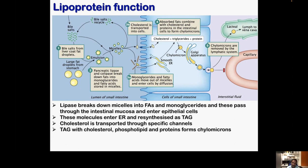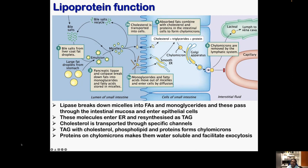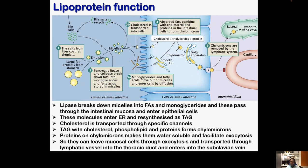The chylomicrons must exit the intestinal epithelium. They use the Golgi apparatus — the cell organelle important for exocytosis — to come outside. Now in the interstitial fluid, because chylomicrons are really large, around one micron, they cannot enter blood capillaries whose pores are too small. Therefore they enter the lymphatic system, which has bigger pores, travel through the thoracic duct, and enter into the subclavian vein, reaching the bloodstream.